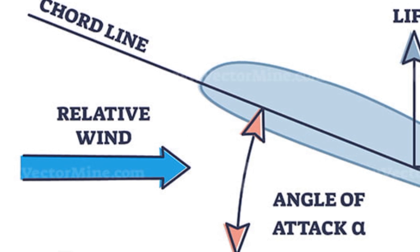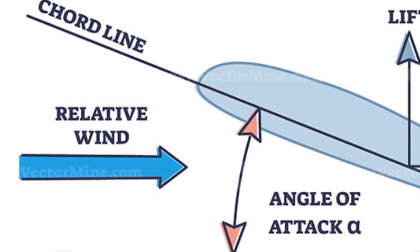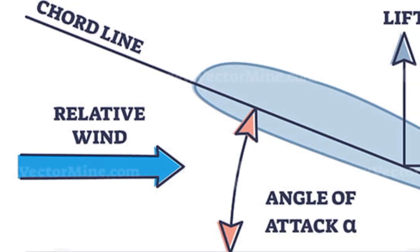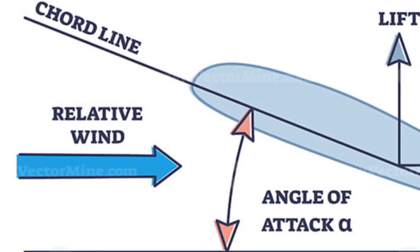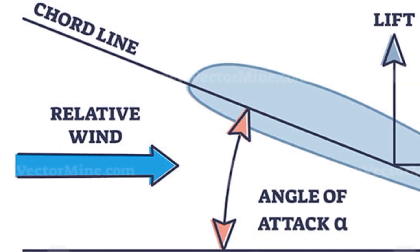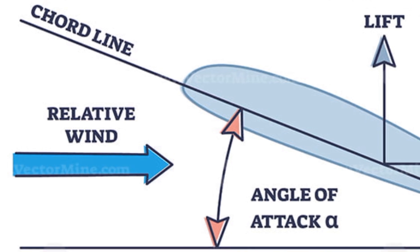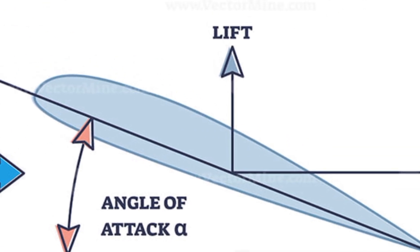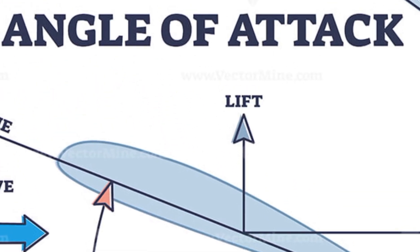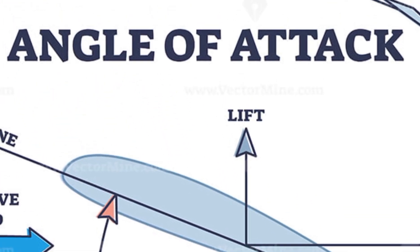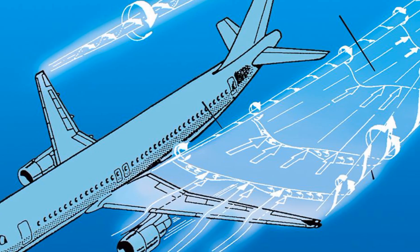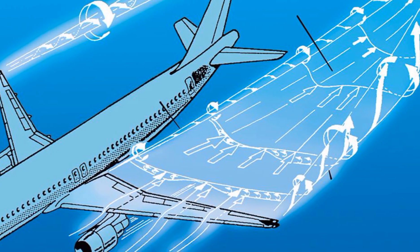Angle of Attack: it's the angle between the oncoming air and the wing's chord line — an imaginary straight line from the wing's front to back. Increasing the angle can generate more lift, but too much and the wing can stall.